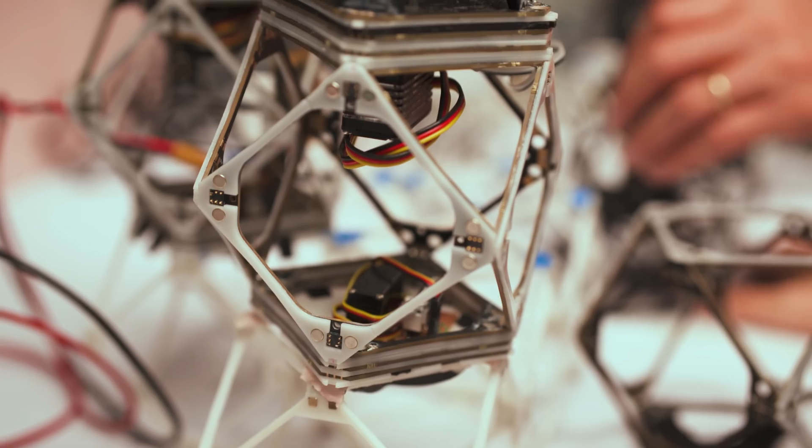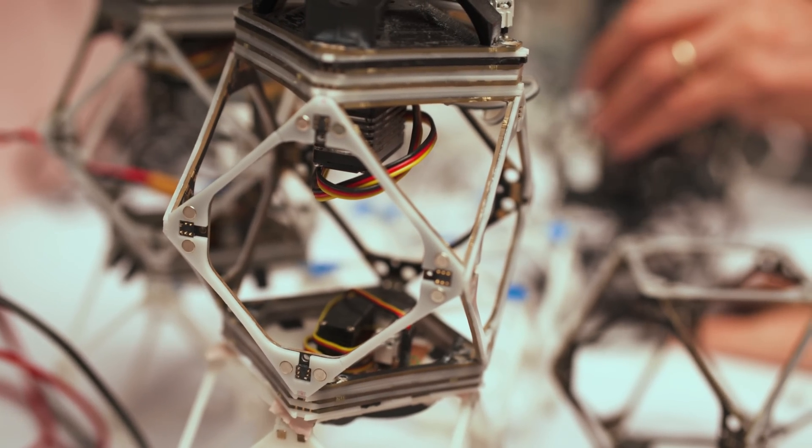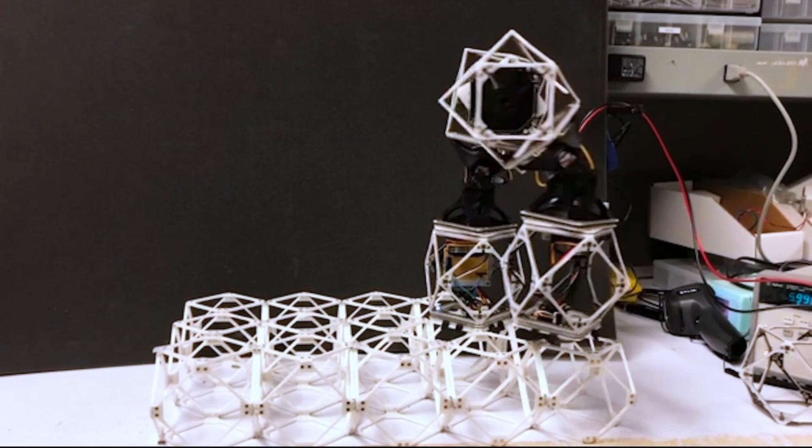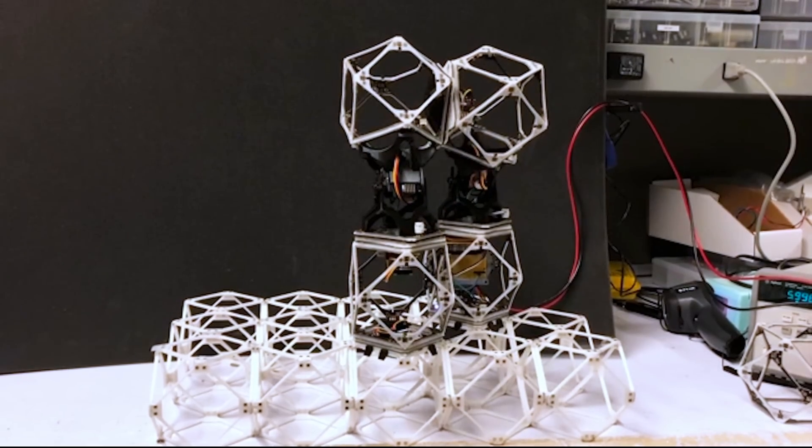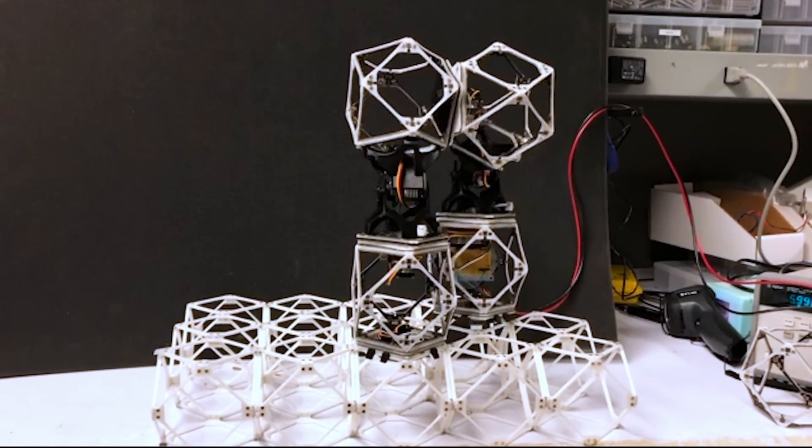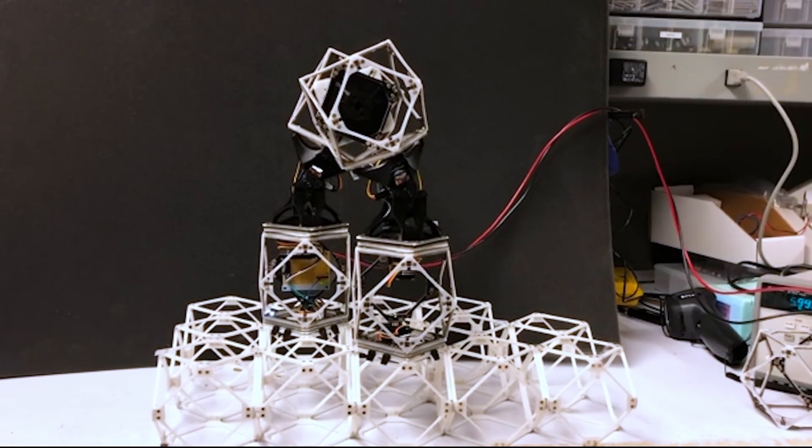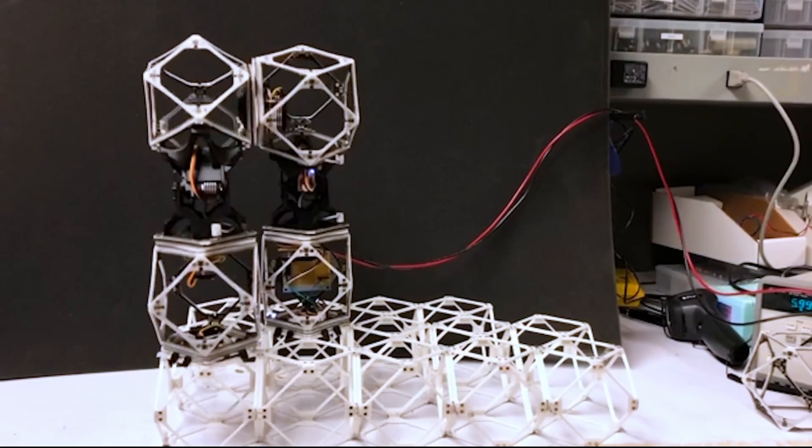The robots consist of a string of several voxels joined end to end. These can grab another voxel using attachment points on one end and then move inchworm-like to the next desired position where the voxel can be attached to the growing structure and released there.